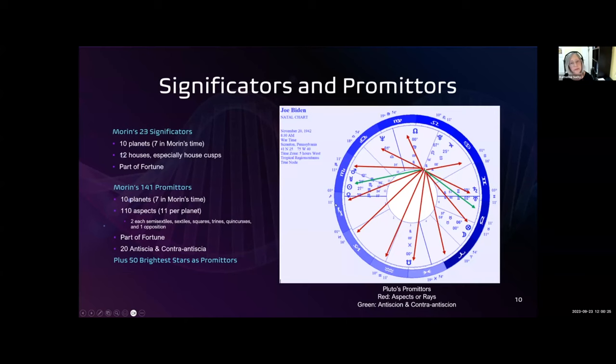Some background. A very important part of primary directions are the significators and promitors. The primary directions rely on the idea that the planets and houses in the natal chart are the significators. The promitors are active and they trigger natal potential.